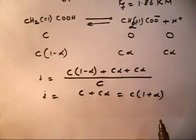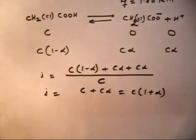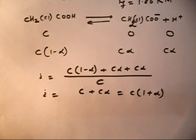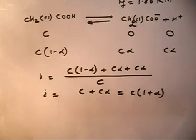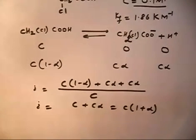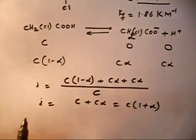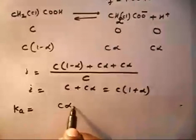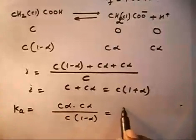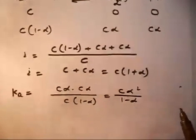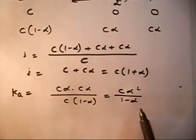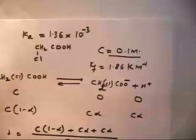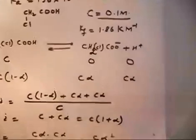Now I can write an expression for Ka. Ka equals Cα × Cα divided by C(1−α), which simplifies to Cα² / (1−α). Assuming alpha is very small (since this is a weak acid with Ka = 1.36 × 10⁻³), alpha ≈ √(Ka/C).